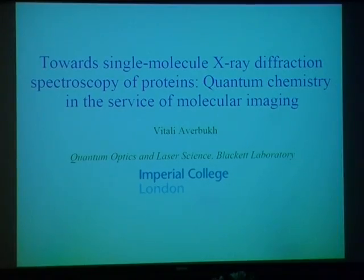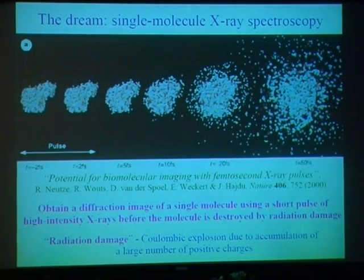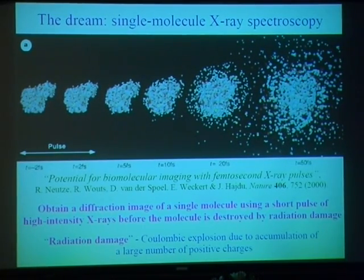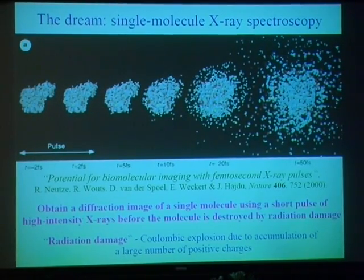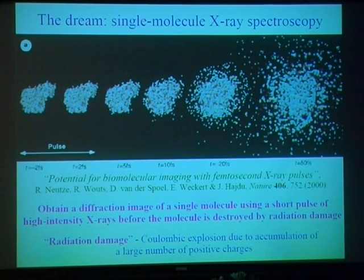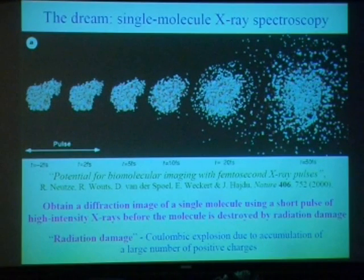Let's see what the objective is first. Suppose we have a protein, and we all understand that in order to understand its reactivity, we should know the structure of the protein. We know the standard way to do it: you first crystallize it, then you do conventional X-ray spectroscopy, you decipher the structure, and so on. The problem, however, starts even on step one—it is not possible to crystallize every protein, and even when it is possible, it's very often a very hard, very difficult task.